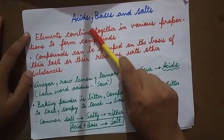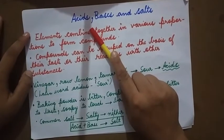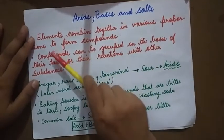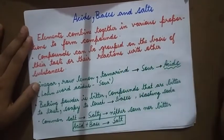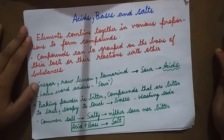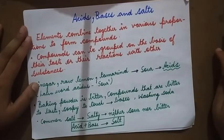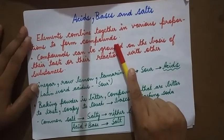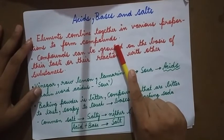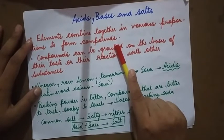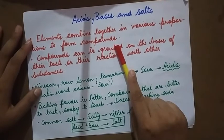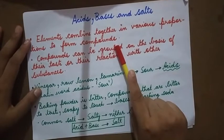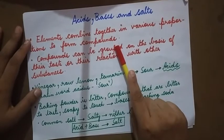Good morning students. Today we are starting off with a new chapter: acids, bases and salts. Elements combine together in various proportions to form compounds. Elements combine in definite amounts to give rise to compounds. For example, hydrogen and chlorine are elements. They combine together to form a compound known as HCl, also known as hydrochloric acid.